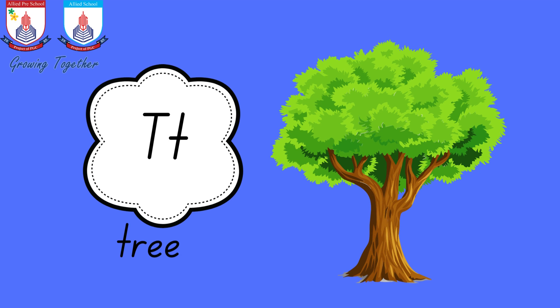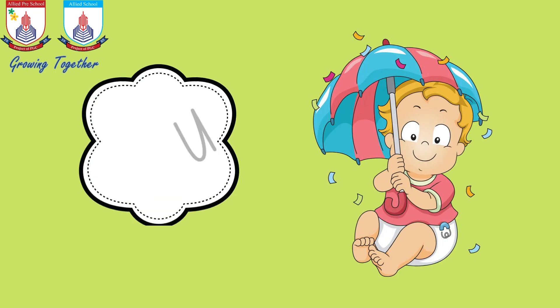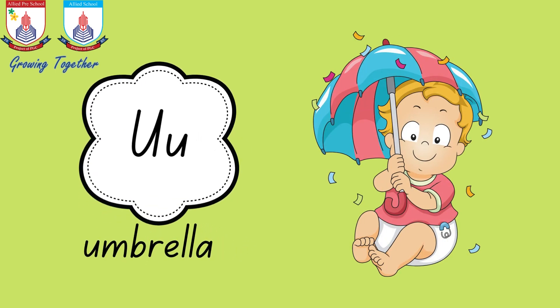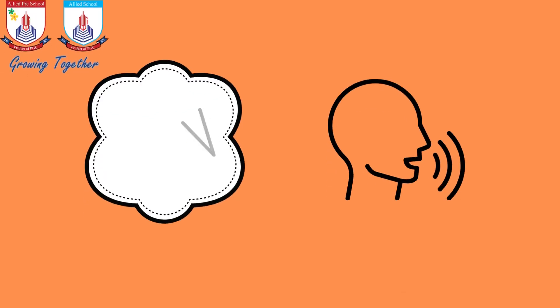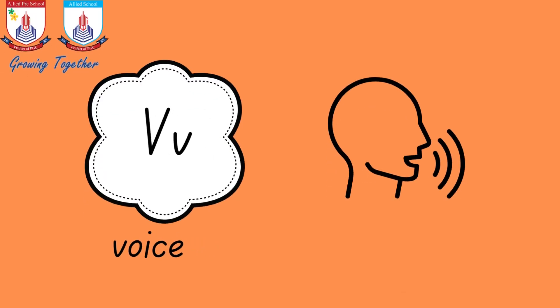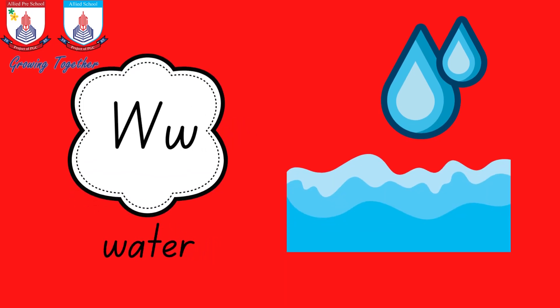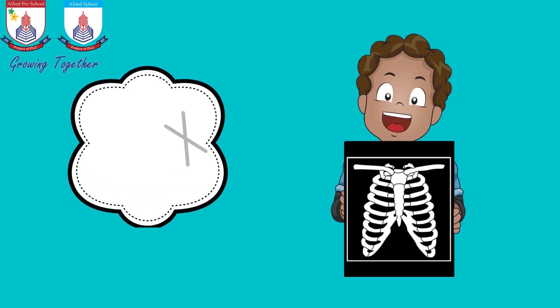U is for a-a-off, a-a-off. V is for v-v-voice, v-v-voice. W is for w-w-water, w-w-water. X is for a-a-ex, a-a-ex.